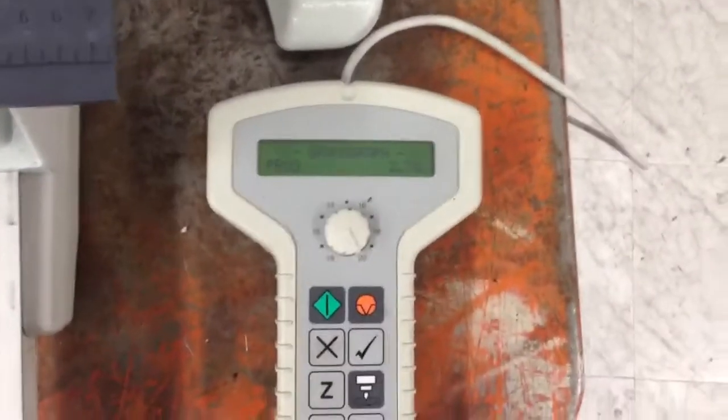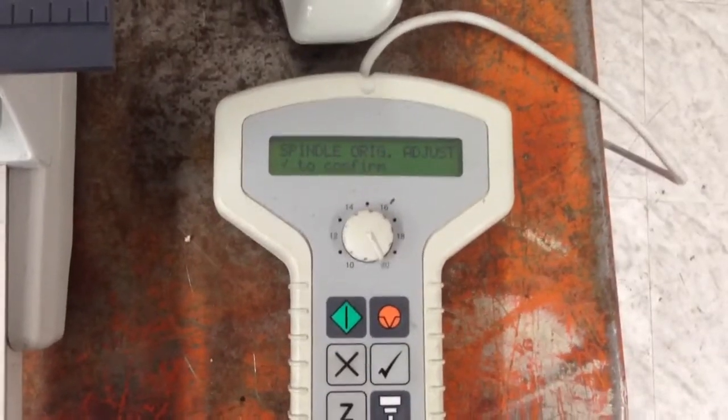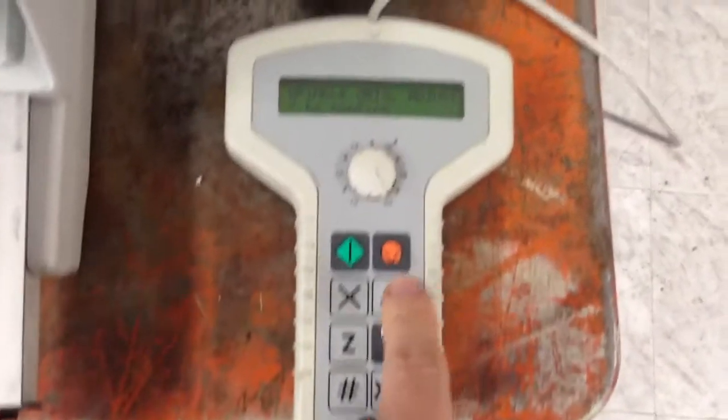Once we have the beep and it shows graver graph, we're going to push the number sign. And it's going to say spindle origin and from there we'll push the check button.